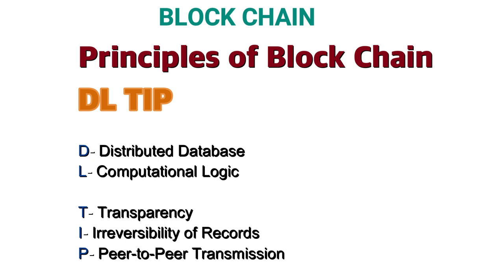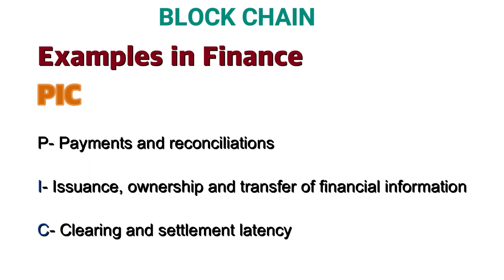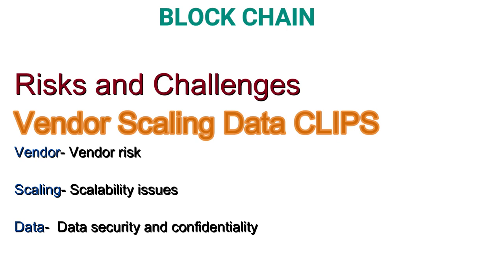Coming to the next topic — Examples of Blockchain in Finance. The mnemonic for the same is 'PIC'. P stands for Payments and Reconciliation, where blockchain is being used. I stands for Issuance, Ownership, and Transfer of financial information. C stands for Clearing and Settlement, addressing legacy clearing and settlement latency.